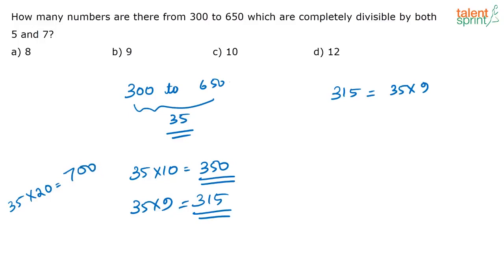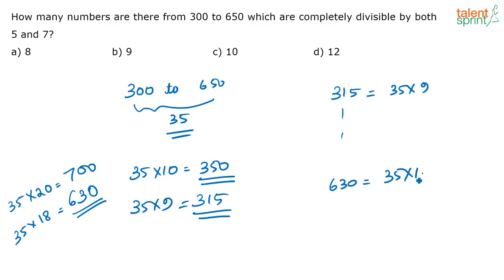We know 35 × 20 = 700, and 35 × 2 = 70. So to find 35 × 18, we subtract 700 - 70 = 630. Therefore 630, which is 35 × 18, is our last multiple within the range. The multiple 35 × 19 falls between 650 and 700, so it is excluded.